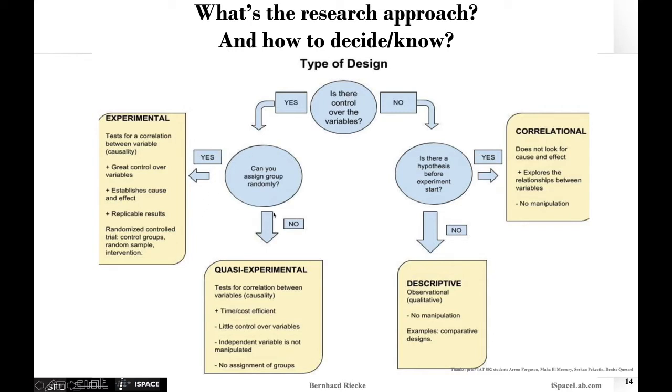To do that, you really need to assign the groups randomly and manipulate the independent or control variables. Then you're in the range of experimental research. There you have great control over the different variables. You can establish cause and effects. The main idea is you manipulate one or more things and try to leave everything else the same. Then if you do find a difference between conditions, you can more or less safely assume there is an actual effect. This can be randomized control studies, often the gold standard.